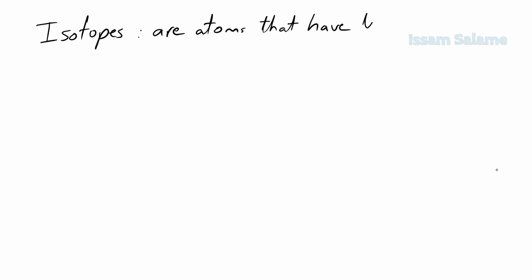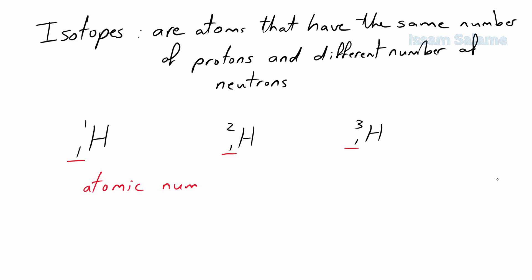Isotopes are atoms that have the same number of protons and different number of neutrons, like hydrogen 1-1, hydrogen 1-2, and hydrogen 1-3. As we can see, all of them have the same atomic number, which is one.